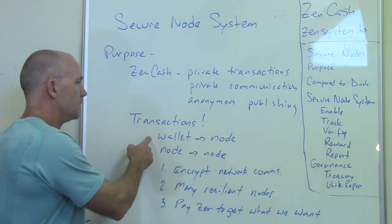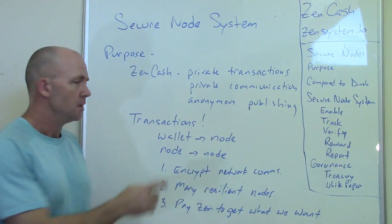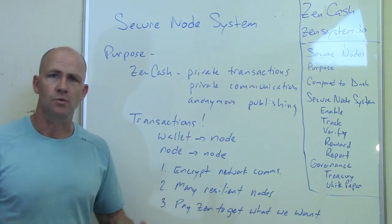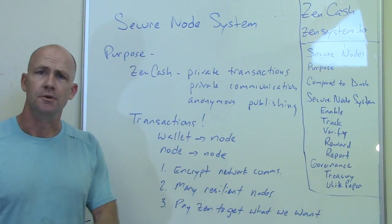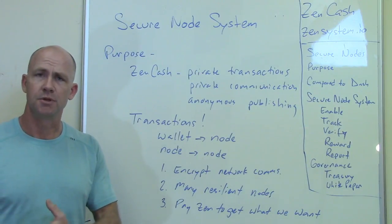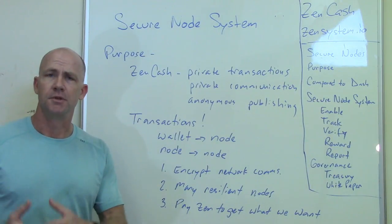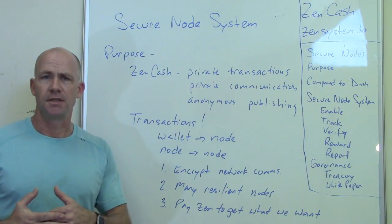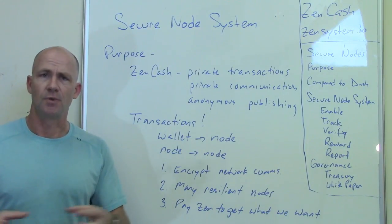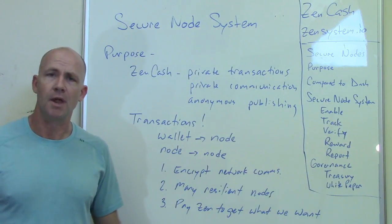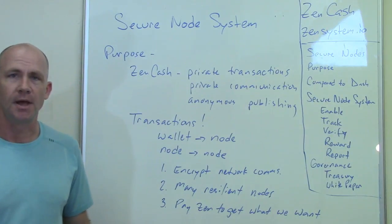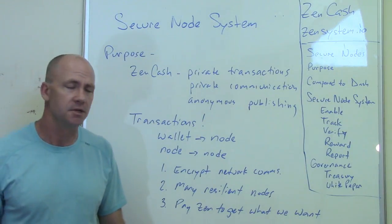That wallet sends information to a node. The nodes send it to one another, and those end up going to nodes operated by mining pool software. The mining pool software puts those transactions into a ledger, and that ledger gets wrapped up into a block that gets appended to the blockchain. That's how we have a blockchain system.